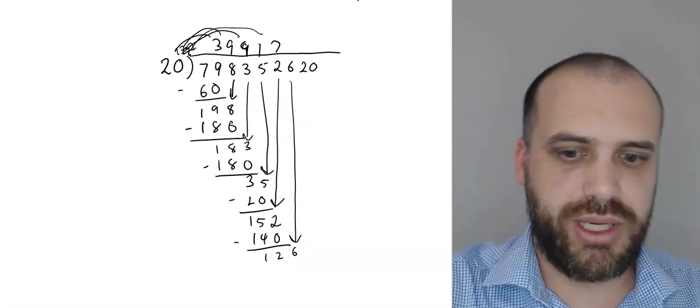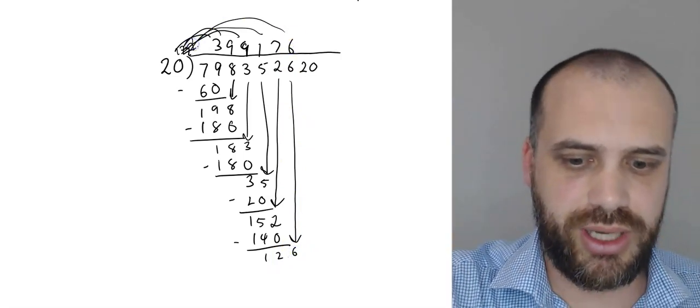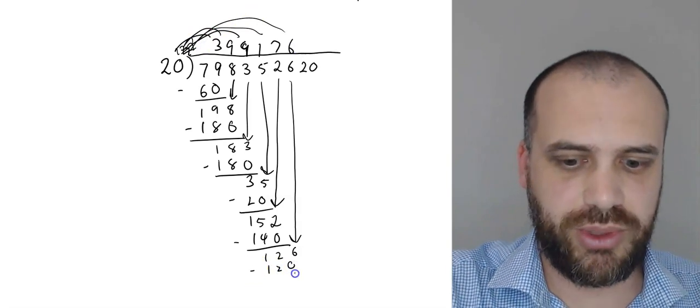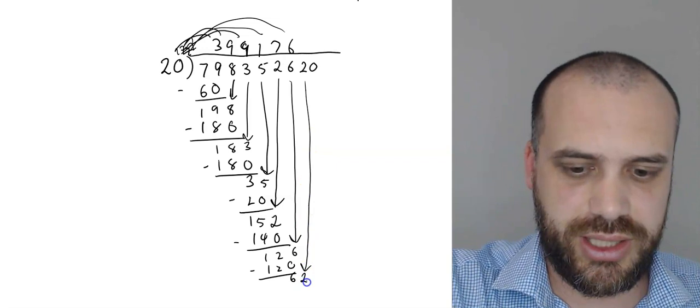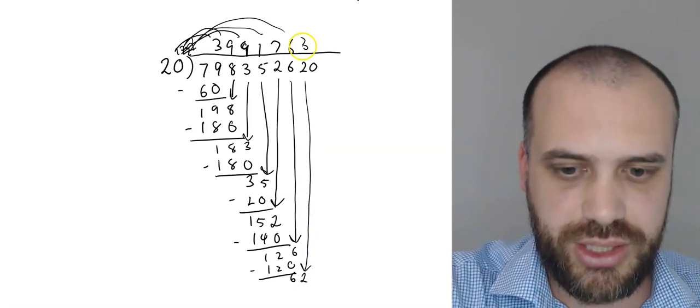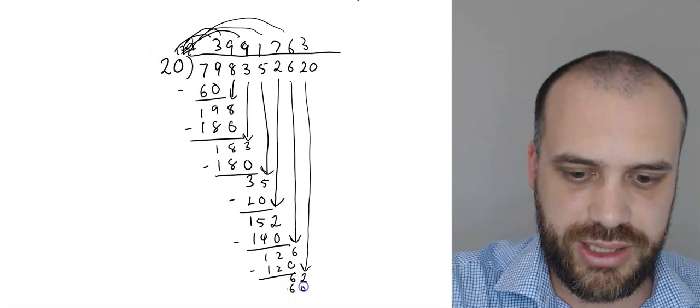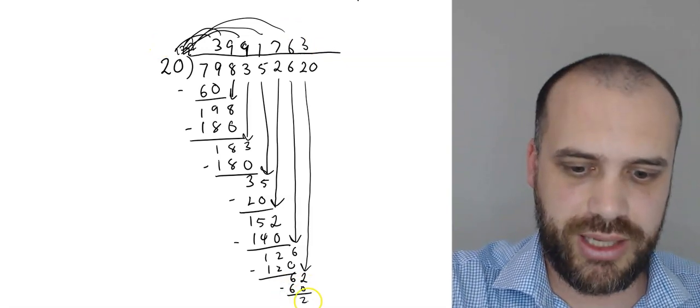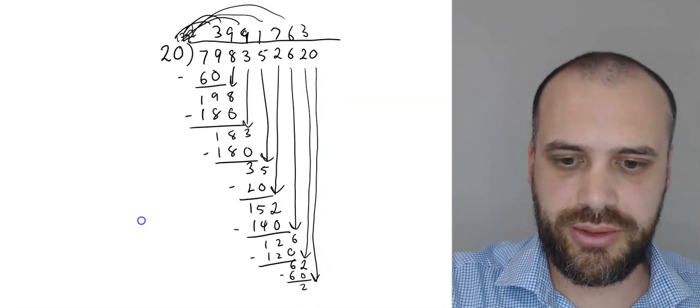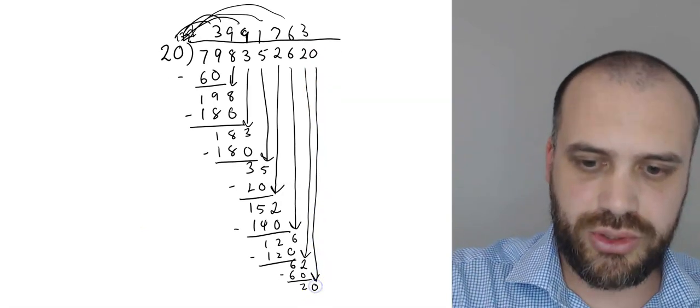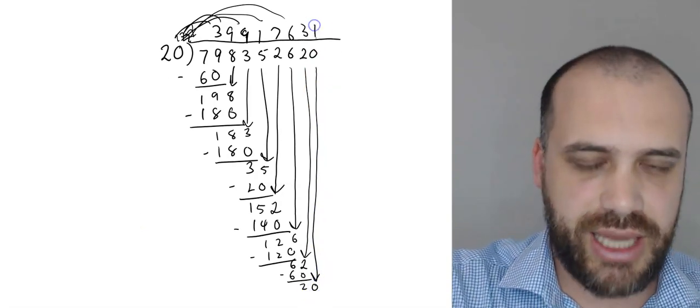126 divided by 20 is 6. Multiply one by the other. We get 120. Subtract one from the other. We get 6. Drag the next one down. 62. 20 goes into 62 three times. 3 times 20 is 60. Subtract one from the other. We get 2. Drag the next one down.